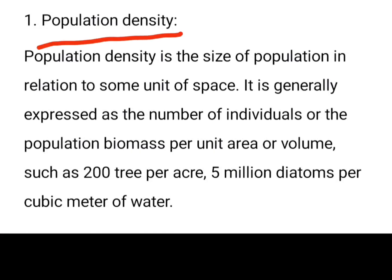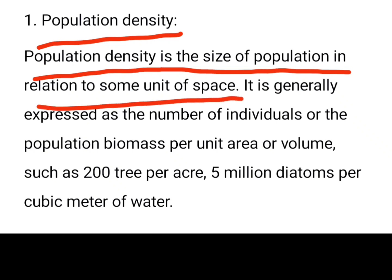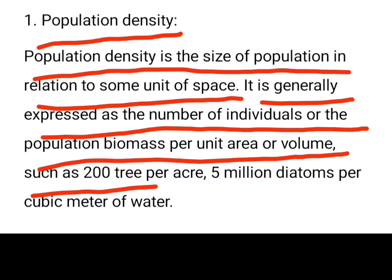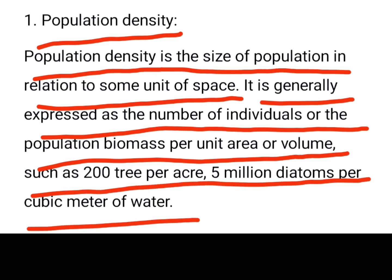Population density is the size of a population in relation to some unit of space. It is generally expressed as the number of individuals or the population biomass per unit area or volume, such as 200 trees per acre or 5 million diatoms per unit of water.